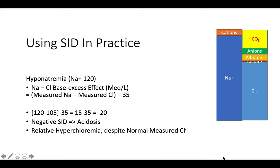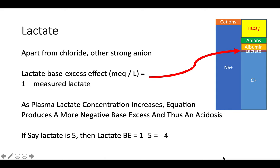Lactate is generated from anaerobic metabolism. Apart from chloride, it is the other important strong anion. The lactic base excess effect is calculated as 1 minus the measured lactate. Normal lactate is below 2. If lactate rises to 5, the calculation gives 1 minus 5 equals minus 4, making the strong ion difference negative, indicating acidosis.